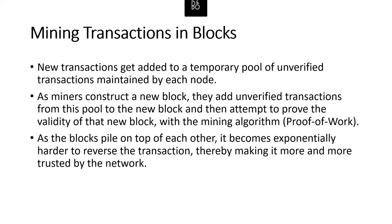There are thousands of specialized mining computers competing for the block reward every 10 minutes in a global race. Finding a solution — the so-called proof of work — requires quadrillions of hashing operations per second across the Bitcoin network. The algorithm involves repeatedly hashing the block header and a random number with the SHA-256 hashing algorithm until a solution matching a predetermined pattern emerges. The first miner to find that solution wins the round and publishes the block to the blockchain. Each miner includes a special transaction in their block paying their own Bitcoin address the block reward plus the sum of all transaction fees from transactions in the block.